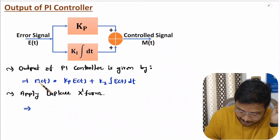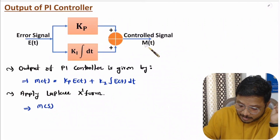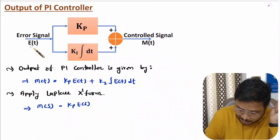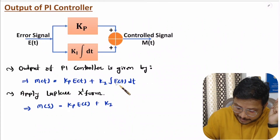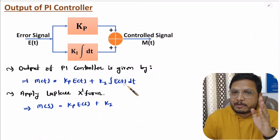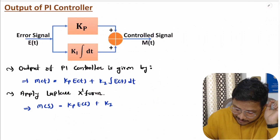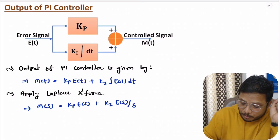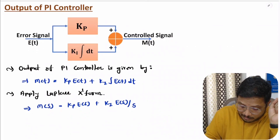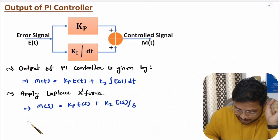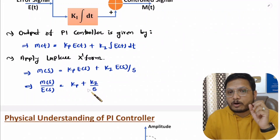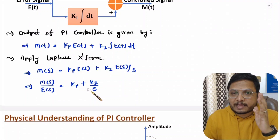Applying the Laplace transform, M(t) becomes M(s) in the frequency domain. The term Kp·E(t) becomes Kp·E(s), and the integration of E(t) dt becomes E(s)/s. The transfer function is output divided by input, so M(s)/E(s) equals Kp plus Ki/s. This is the transfer function of the PI controller.